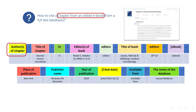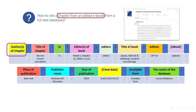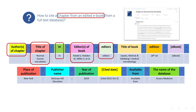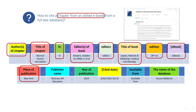First, put the authors of the chapter — family name and initials, full stop. If there is no author, the title of the chapter is placed in the author position. Next, put the title of the chapter, full stop, then type in colon, state editors of the book, comma, type editors, full stop, insert title of book, full stop. After that, provide the edition number of the book.